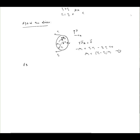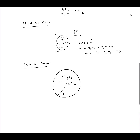Now let's draw a free body diagram of the driven pulley — the output pulley at point B with radius R2. We have reaction forces Bx and By, a moment M2 from the attached load, and tensions T1 and T2. Taking the sum of moments about point B equal to zero: M2 equals (T1 minus T2) times R2. That's equation 2.